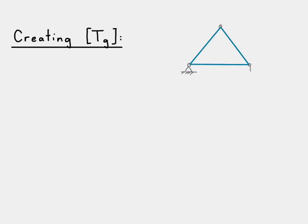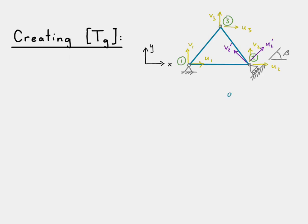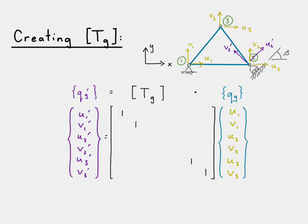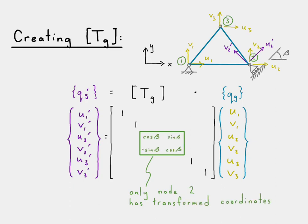How do we create the global transformation matrix? Let's draw out our system one more time. There's our slope with angle beta, our global displacements, and our transformed displacements at node two due to that slope. Here we have our original global displacements and our transformed global displacements. These are related by that global transformation matrix. For node one and node three, all we have are ones, which means there's a direct relationship — the transformed displacement at node one in the horizontal direction, u one prime, is exactly the same as u one. The only thing that changes is node two, where we apply a coordinate transformation, and all the empty spaces get populated with zeros. So that's our global transformation matrix.